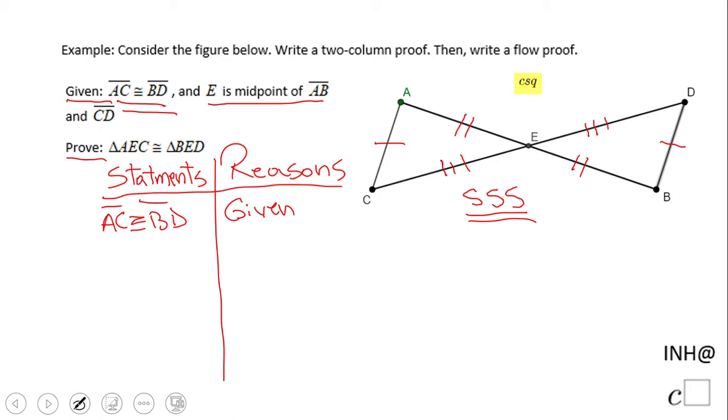And then I'm going to go with E is the midpoint of AB. Again, this statement is given to us. So I'm going to write again given. Based on this statement, I can write my next statement, which is AE congruent with EB. And this goes, the reason here is definition of midpoint. The midpoint cuts the segment in half.